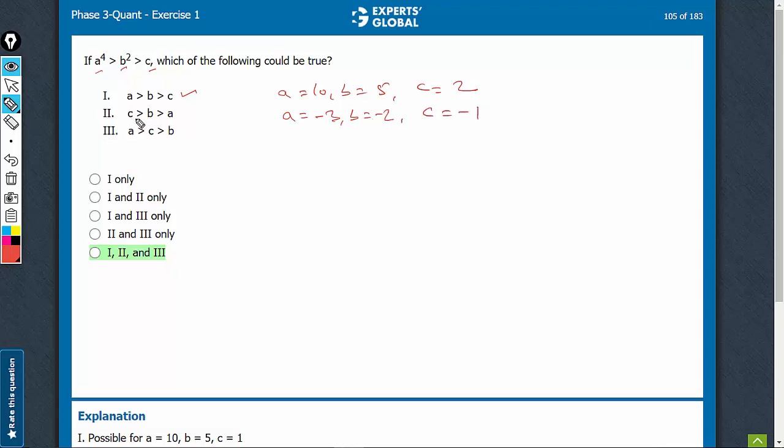So originally, c is the greatest, then b, then a. But when you take higher powers, the negative values become positive, and such a relationship is possible. So 2 is also possible.